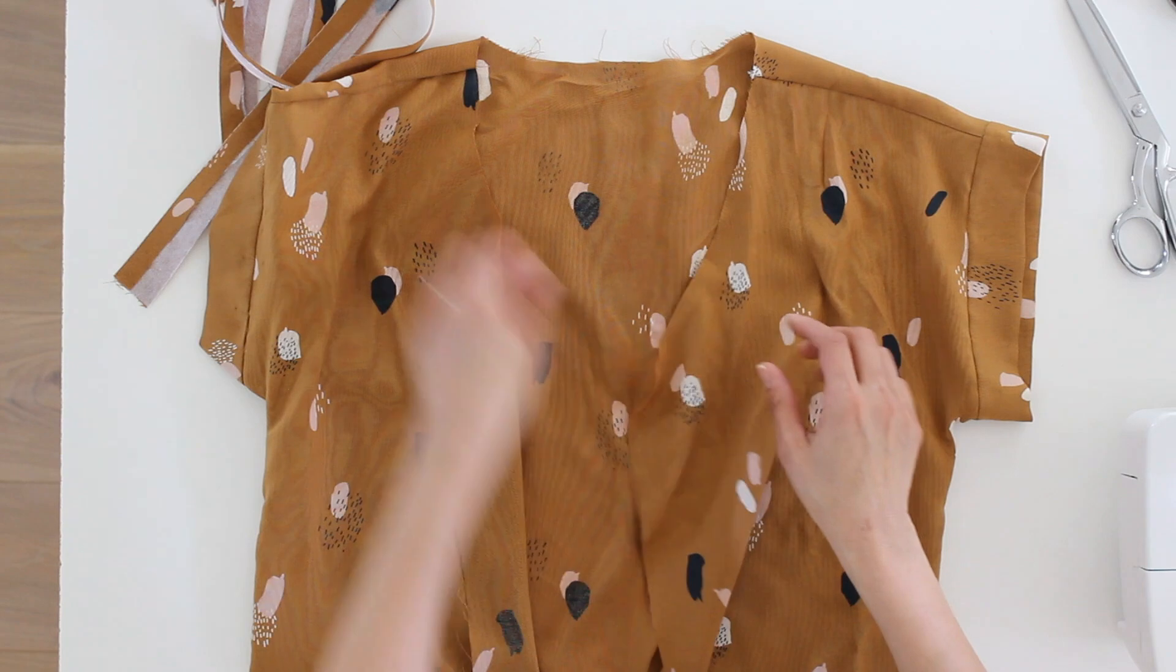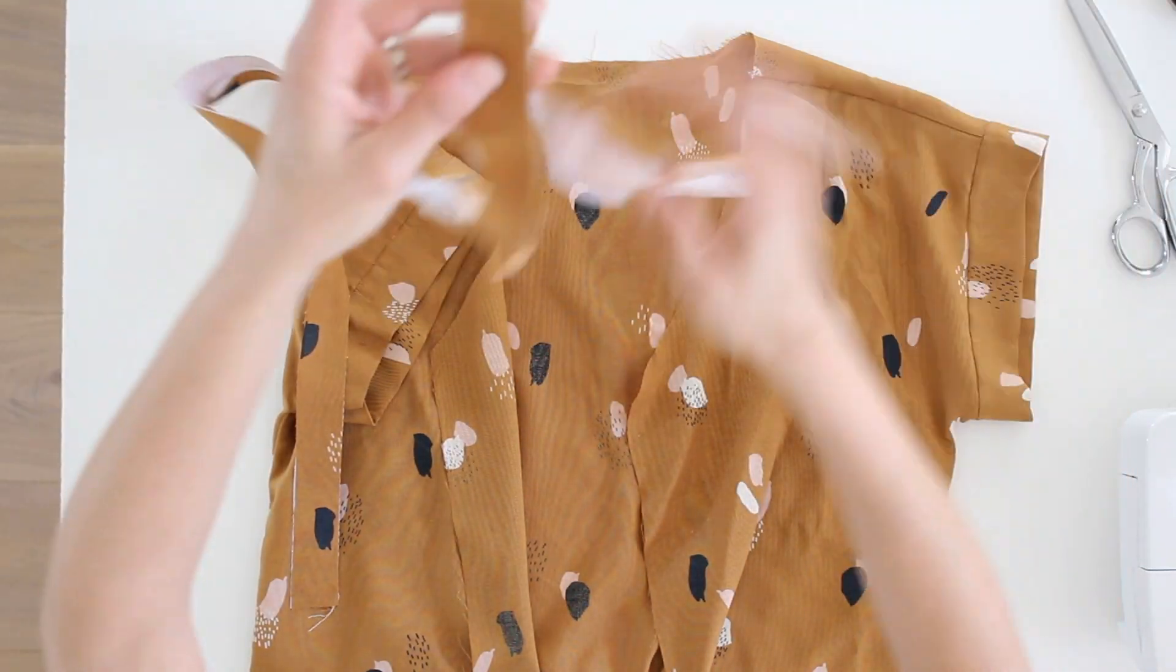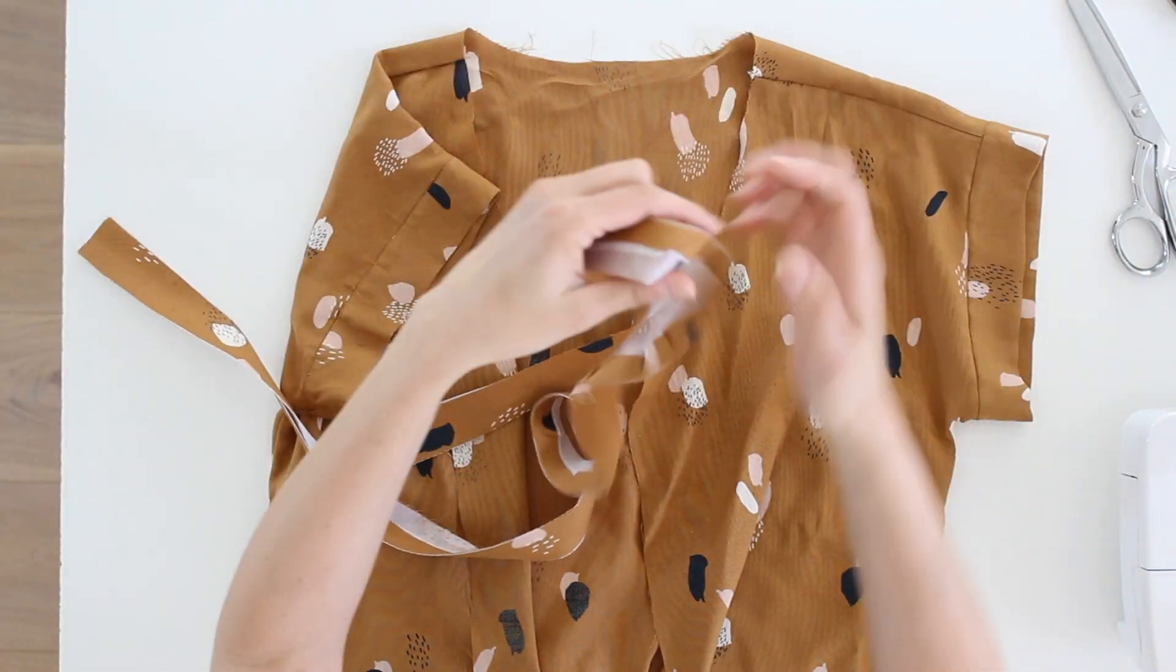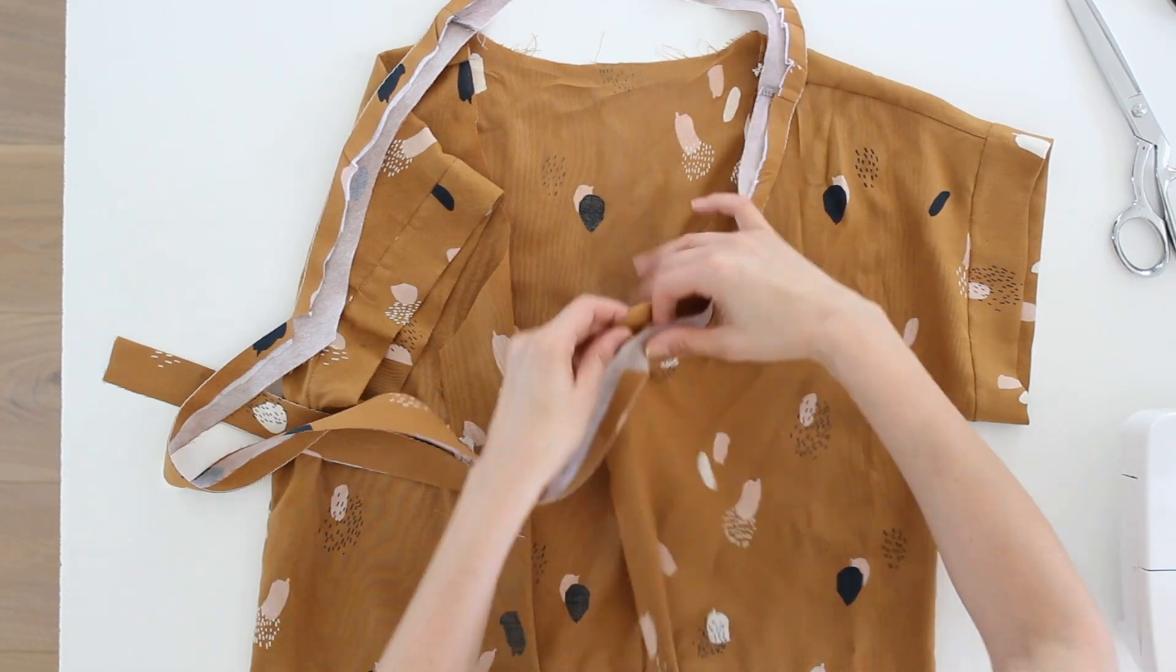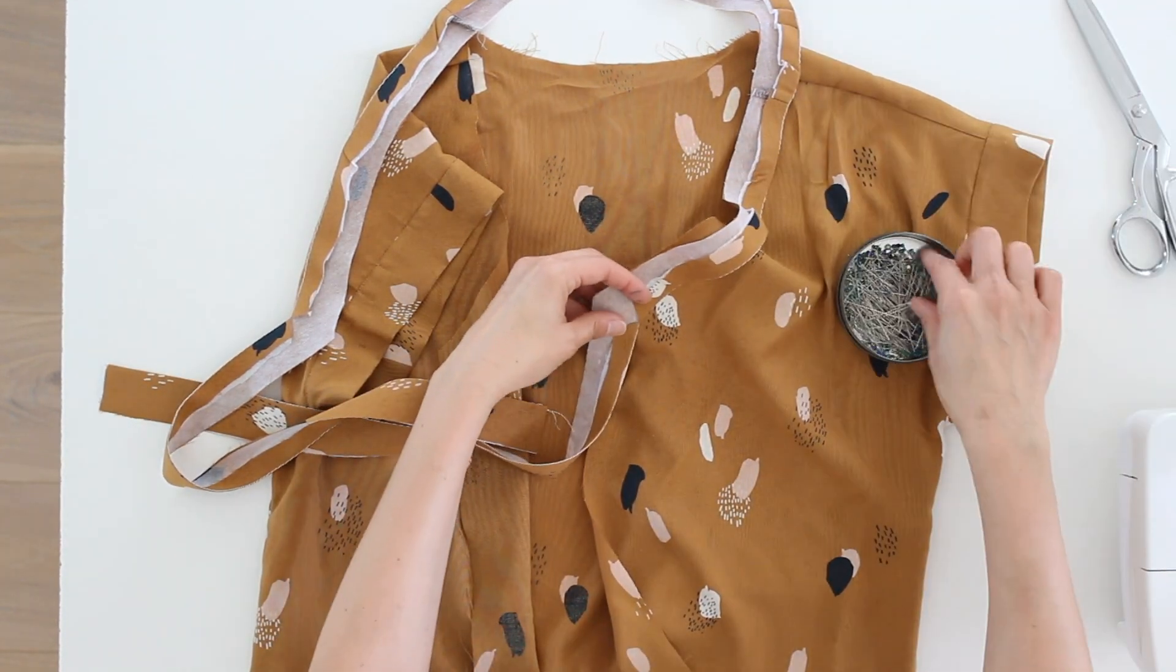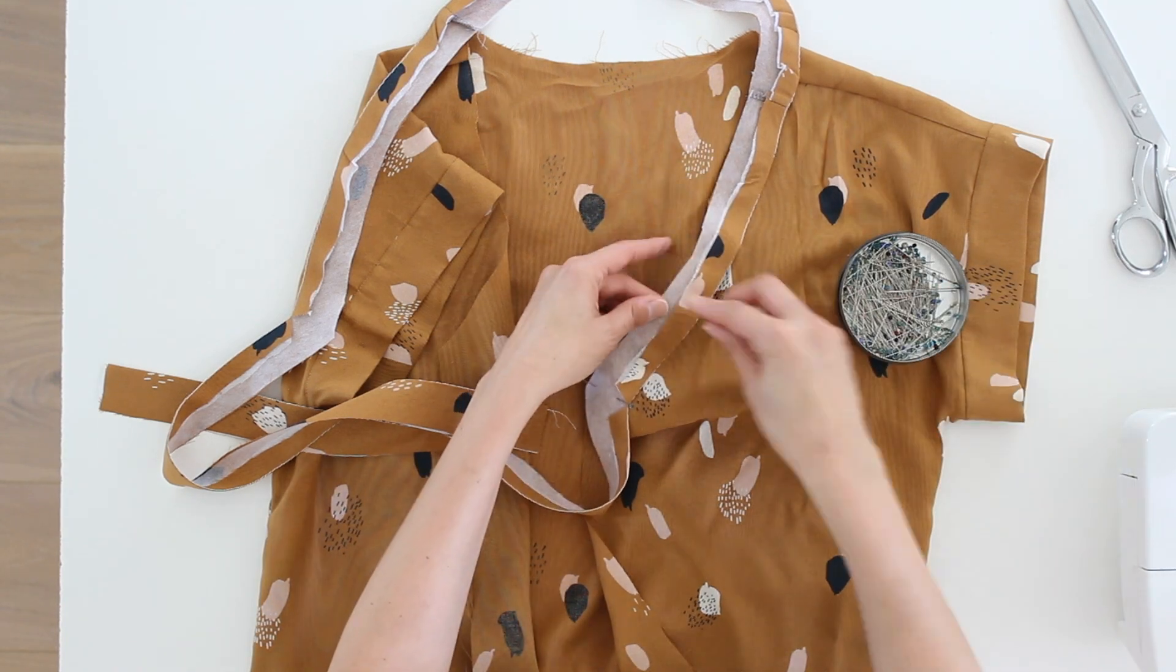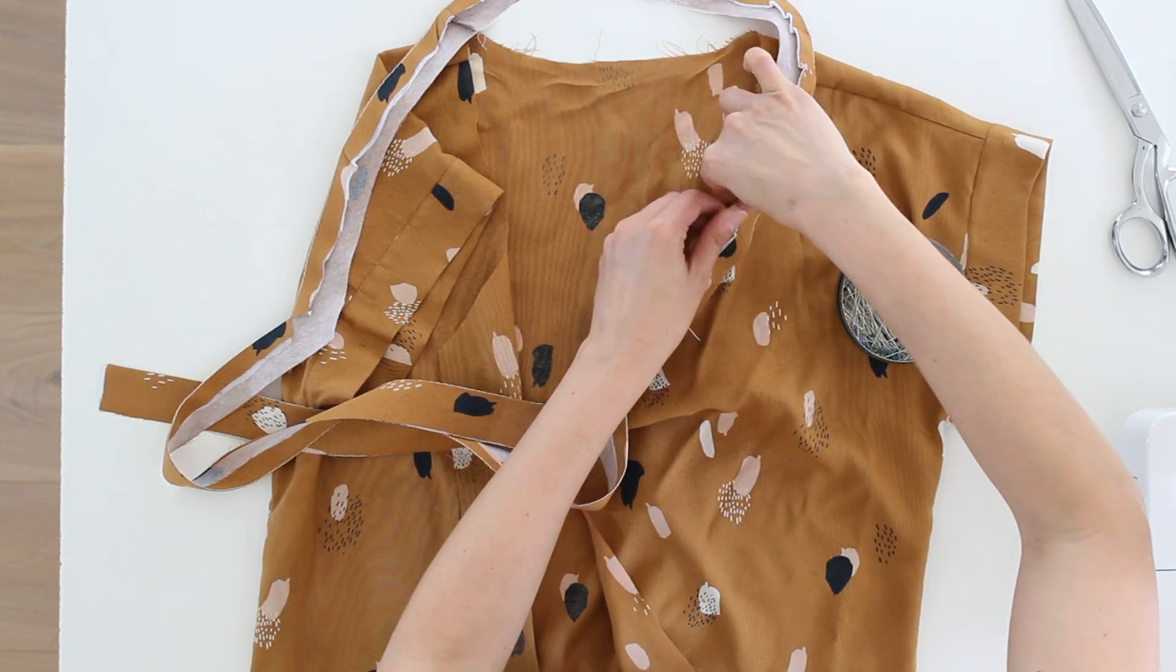To attach this to the shirt, I'm just going to pin right sides together. So you want to match the shoulder seams and you want to match the points. And we're going to be stitching on this neckline edge.